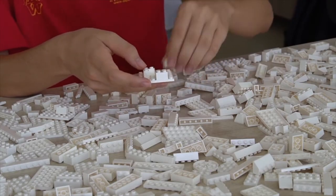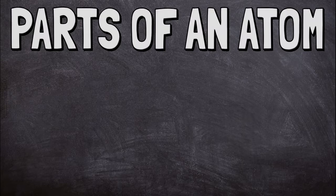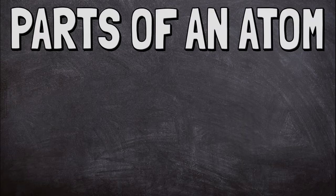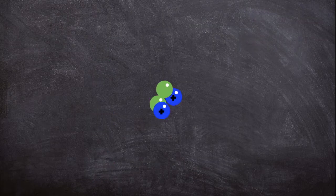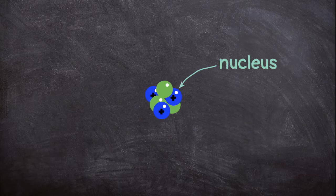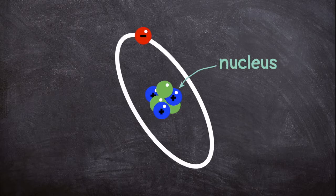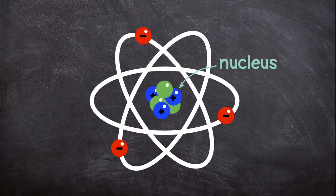Atoms are made of even smaller particles called neutrons, protons, and electrons. Together, the neutrons and protons make up the nucleus at the center of the atom. The electrons move in circles around the nucleus, sort of like planets circling the Sun.